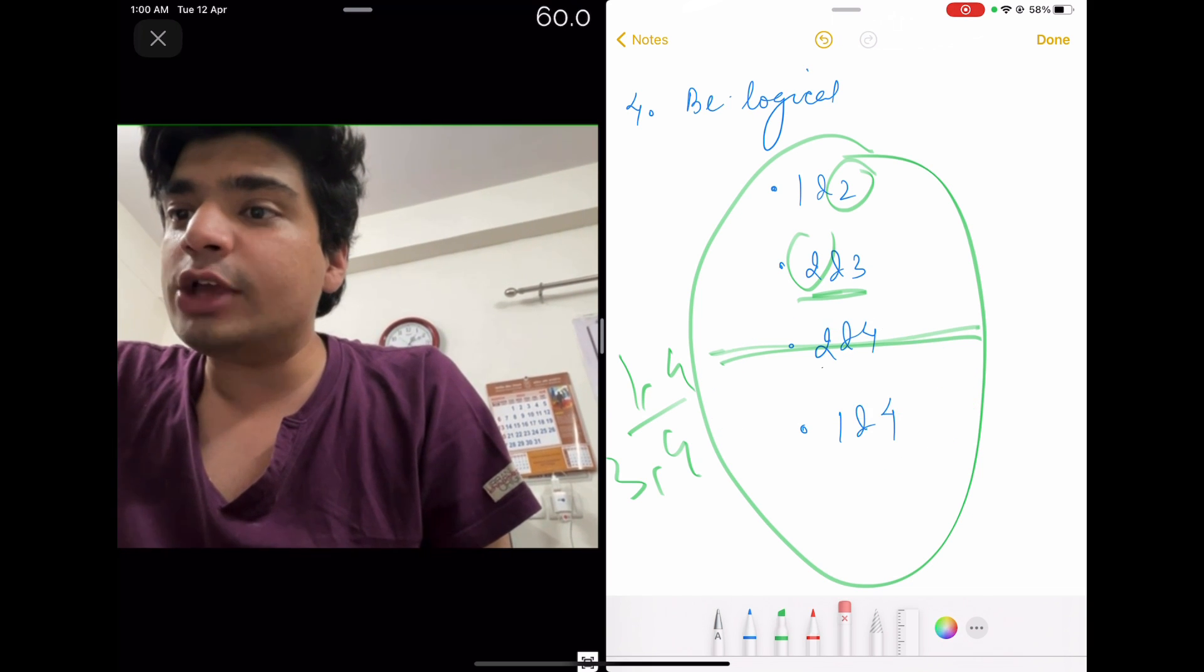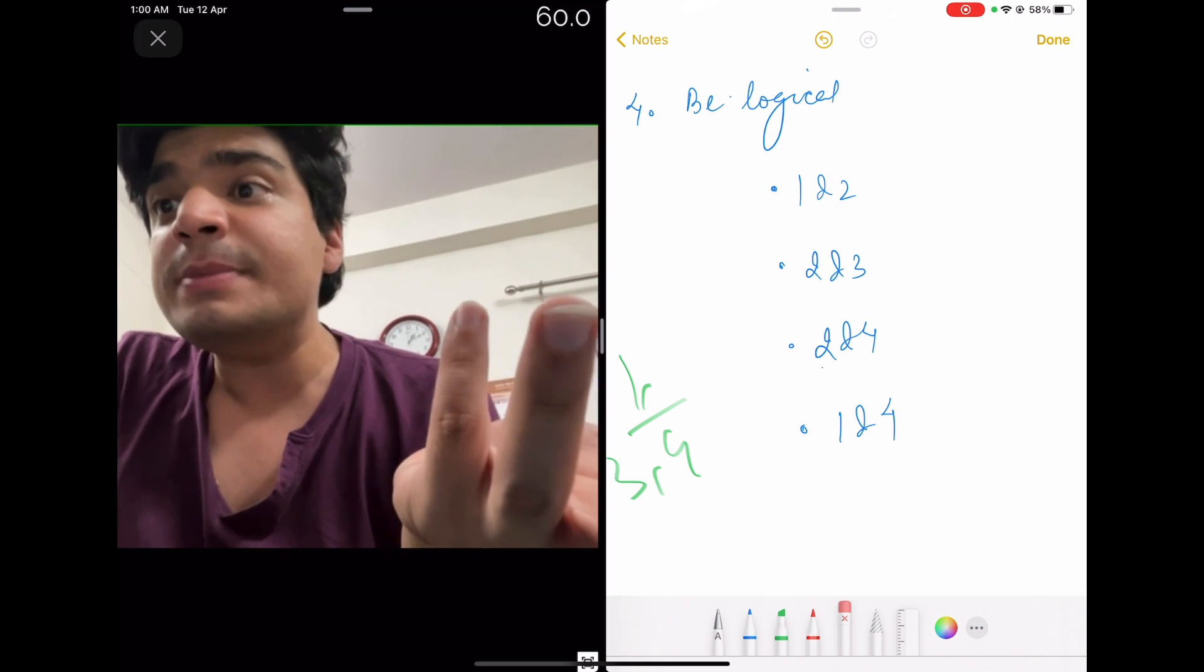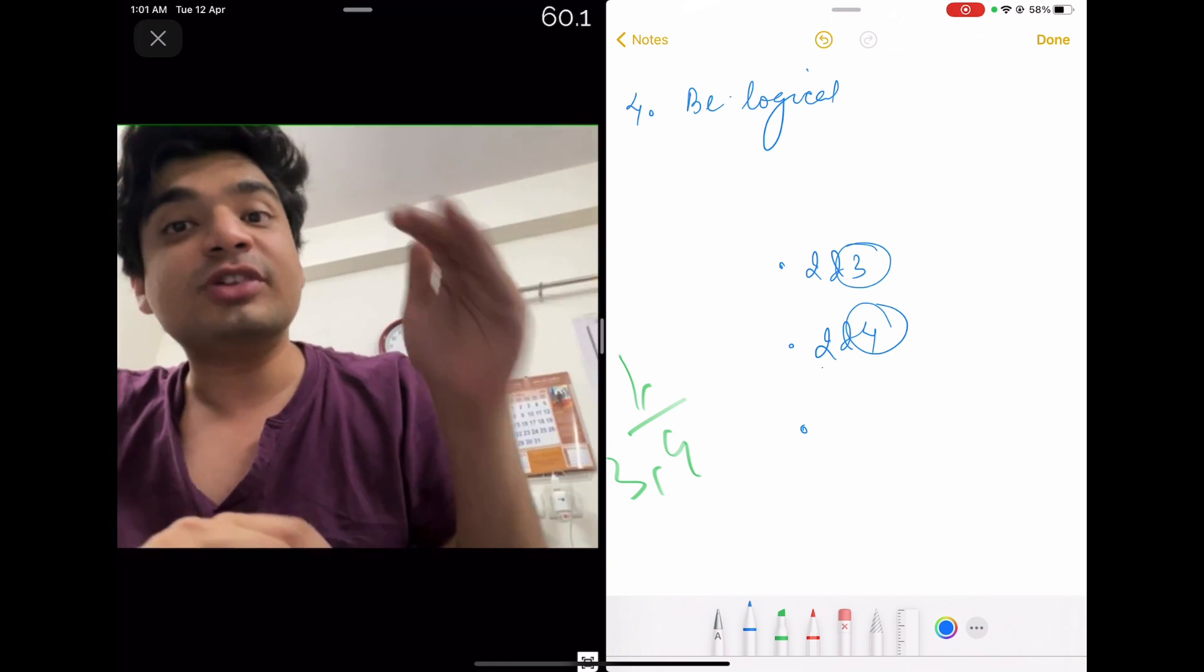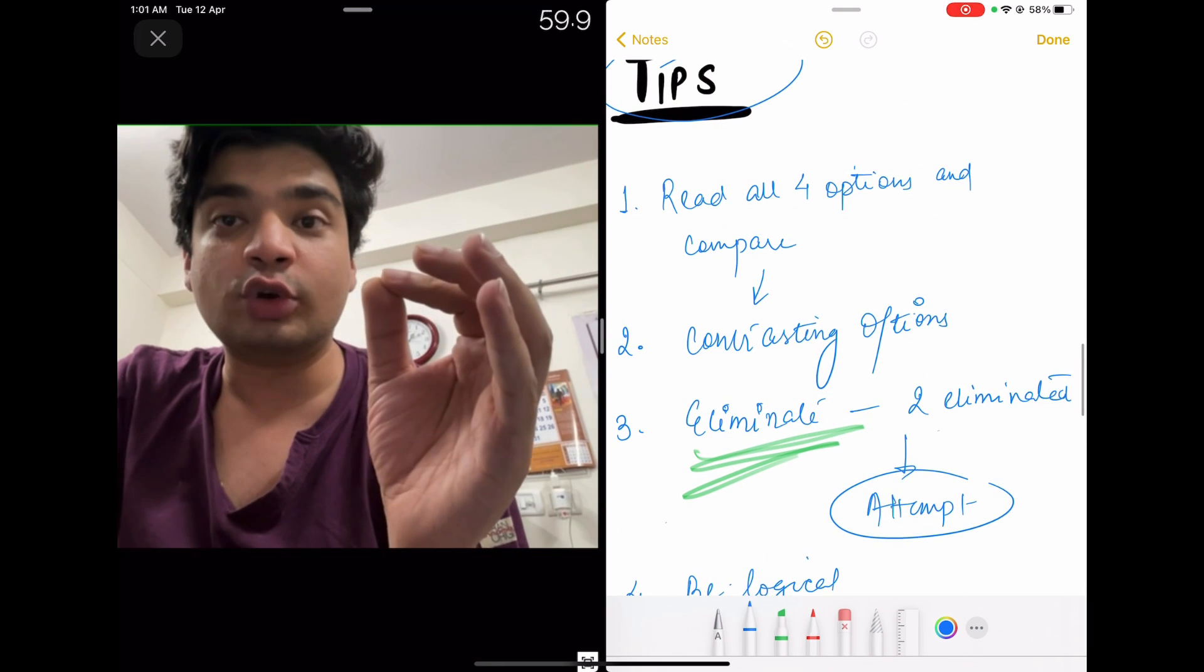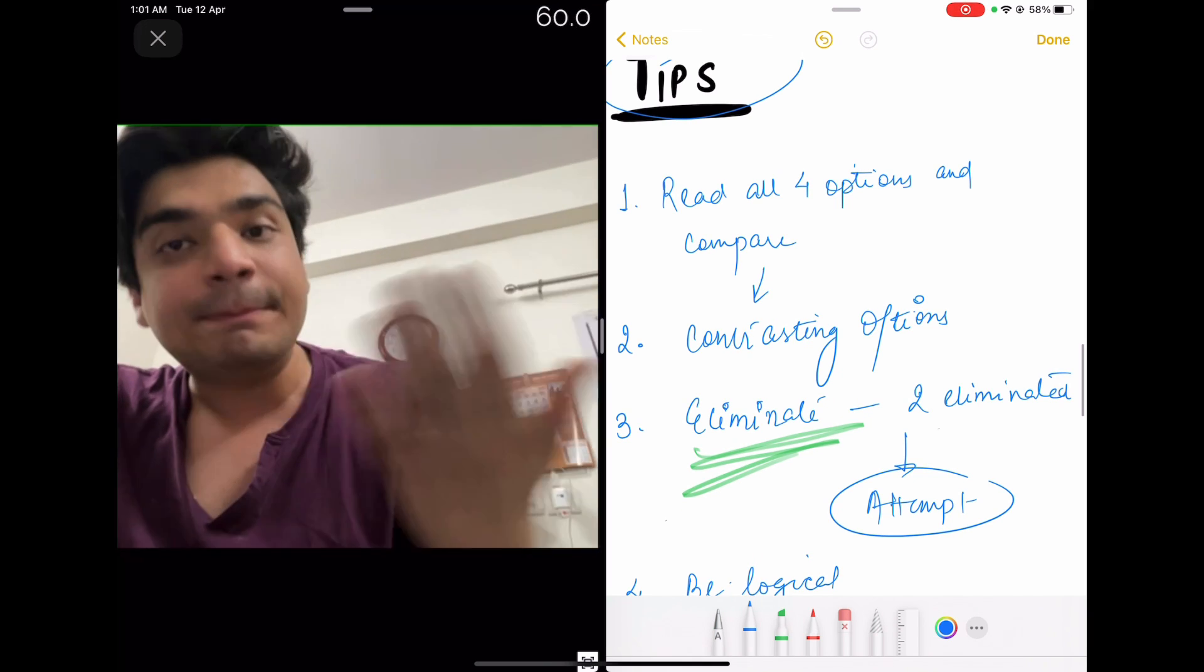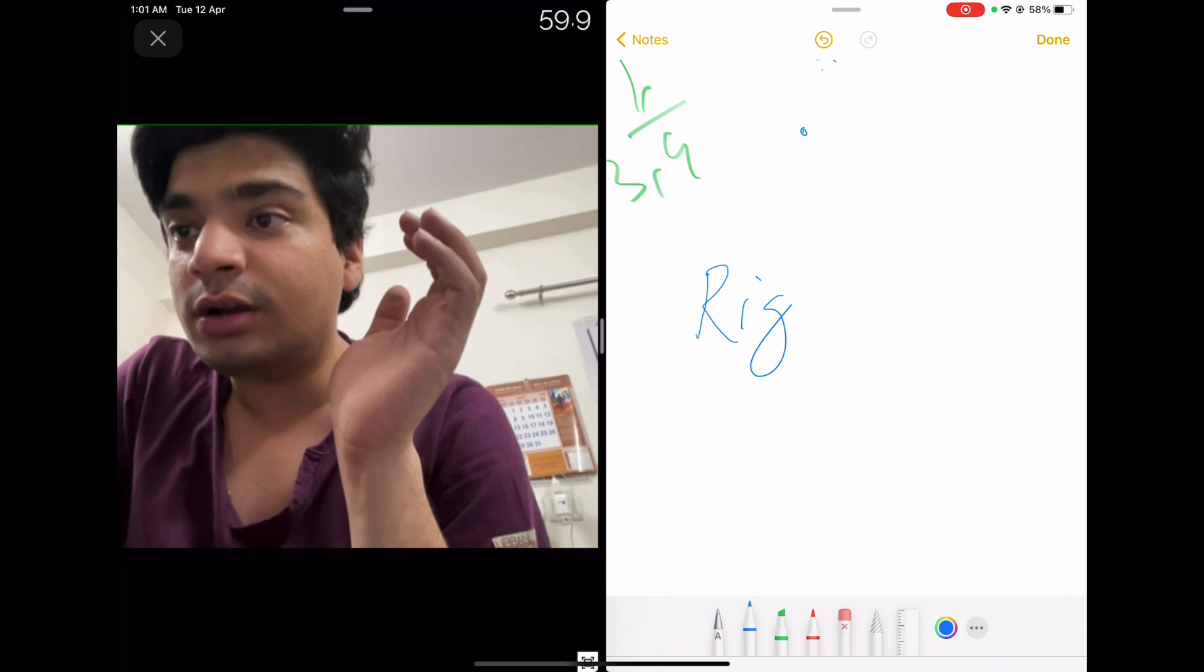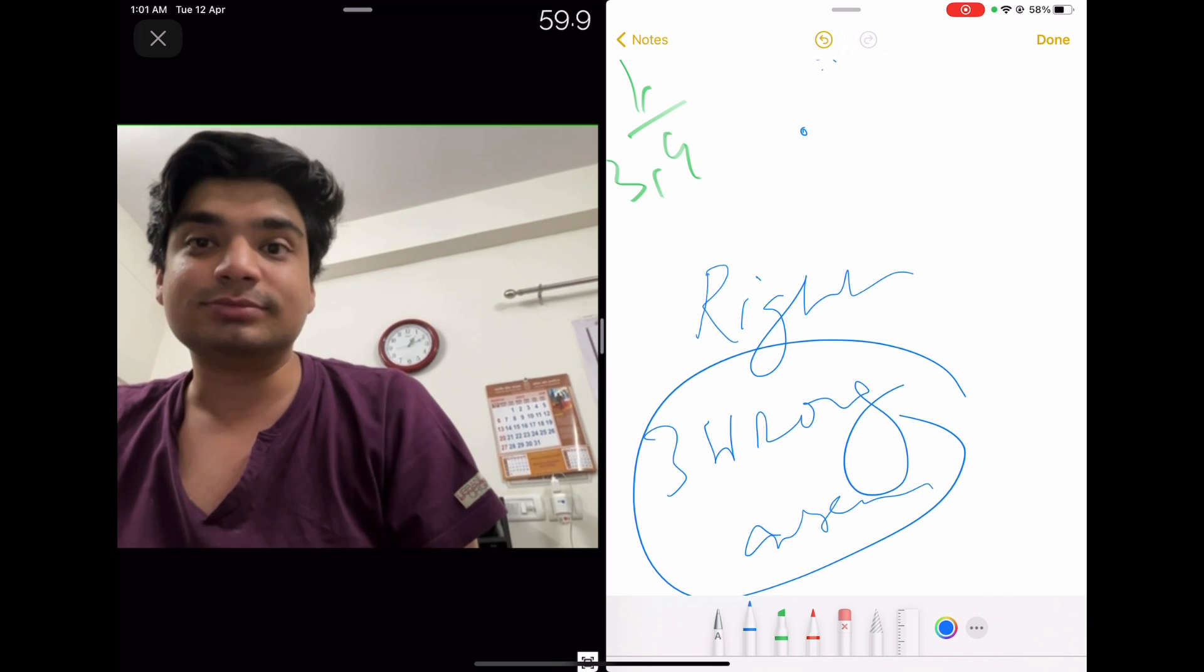Let's take another option. Let's say you just know whether 1 is correct or not. If you know that 1 is incorrect, so immediately you eliminate these two options. And you know 2 and 3 and 2 and 4. You again just need to figure out that 3 is correct or 4 is correct. So you don't need to know all the options and still you can get to an answer. Right? So be logical in your approach. Read all the 4 options. And compare contrasting options. And try to get into the habit of elimination. There is one thing my senior always used to say. In MCQs there is no right answer. There are 3 wrong answers. So get into the habit of figuring out those 3 wrong answers. Right will be left.